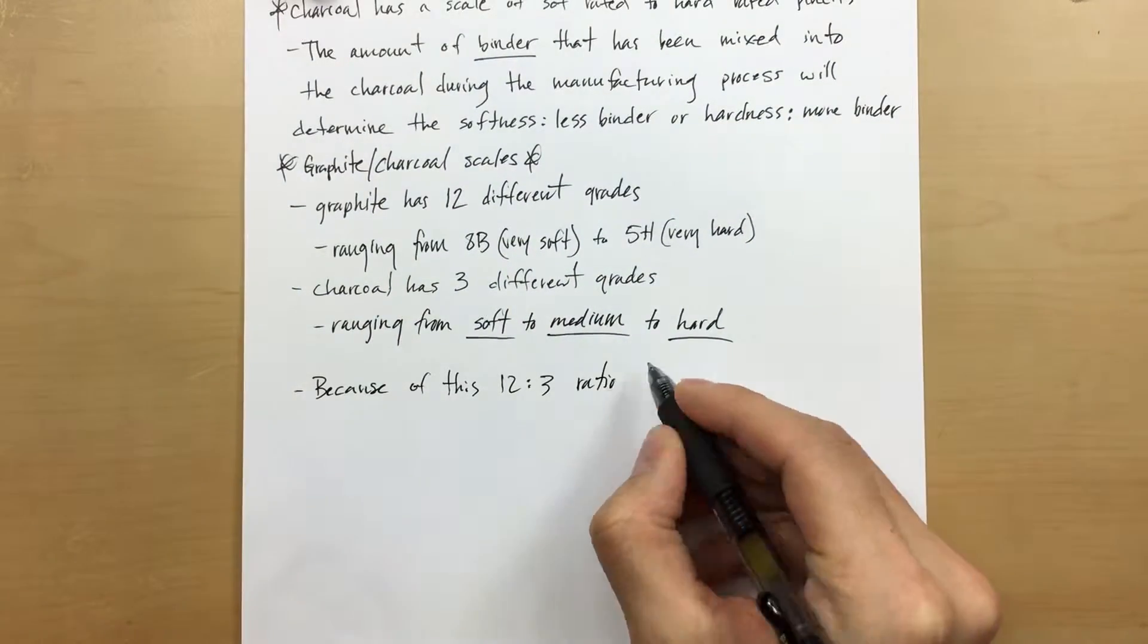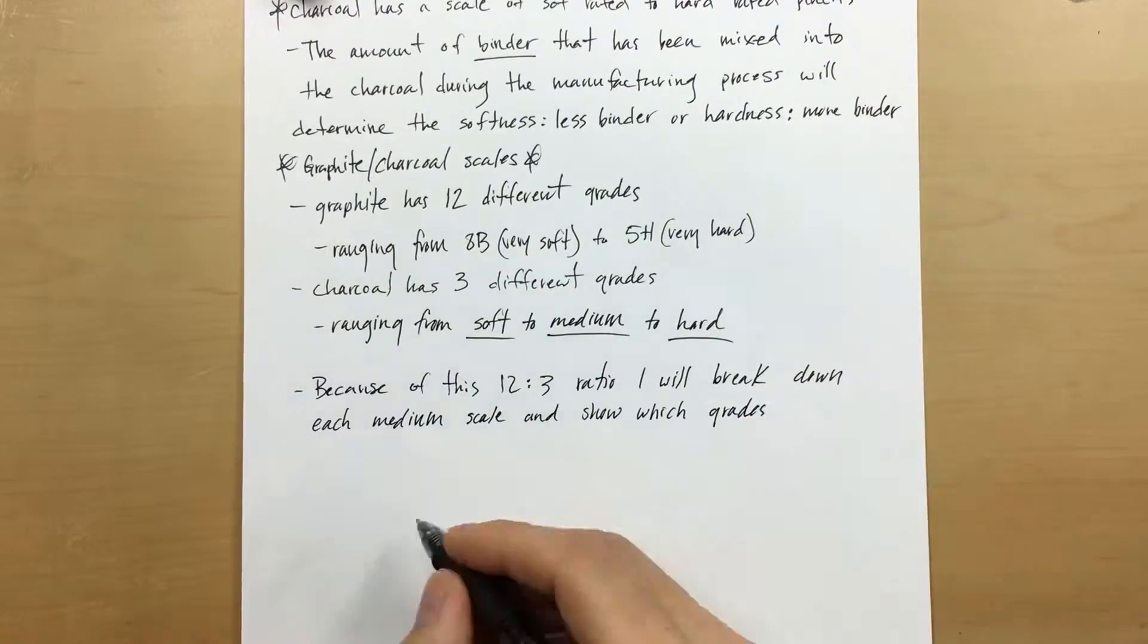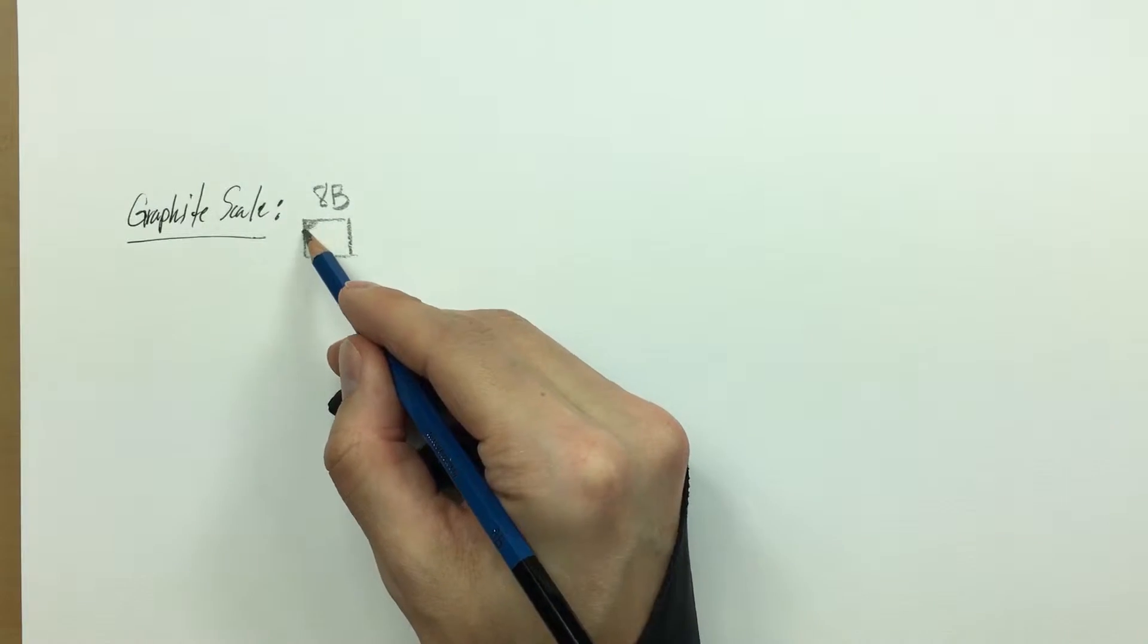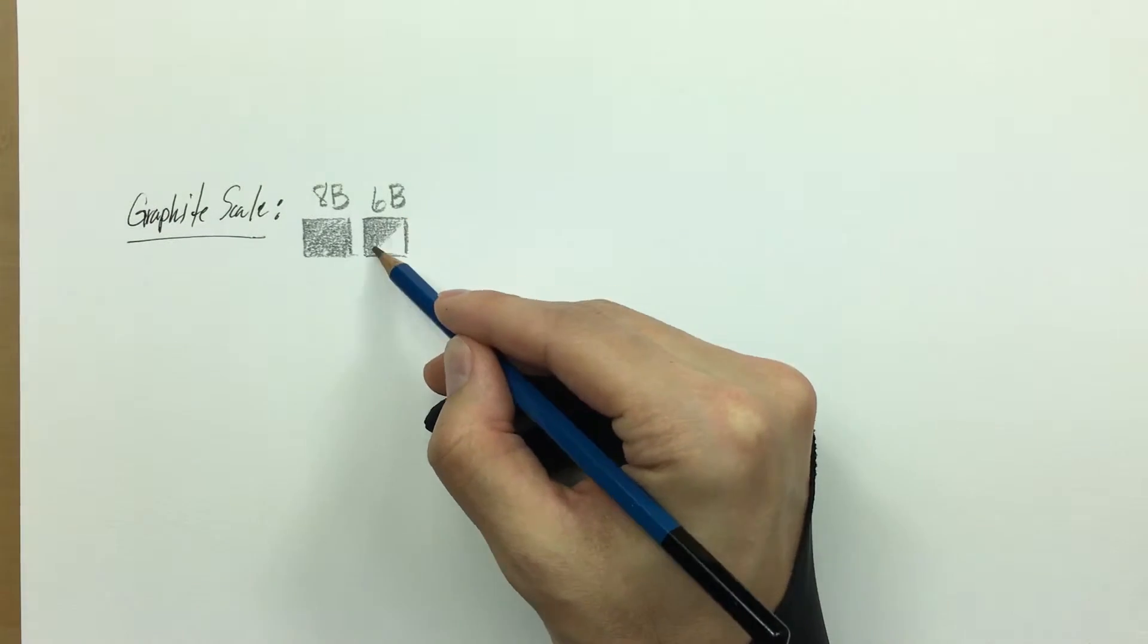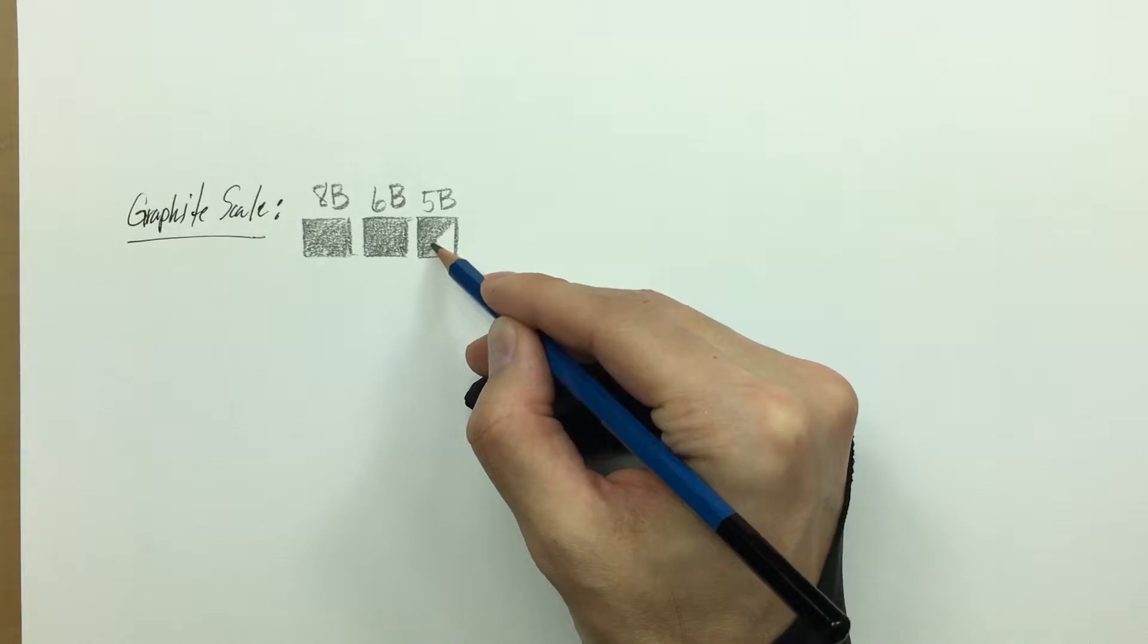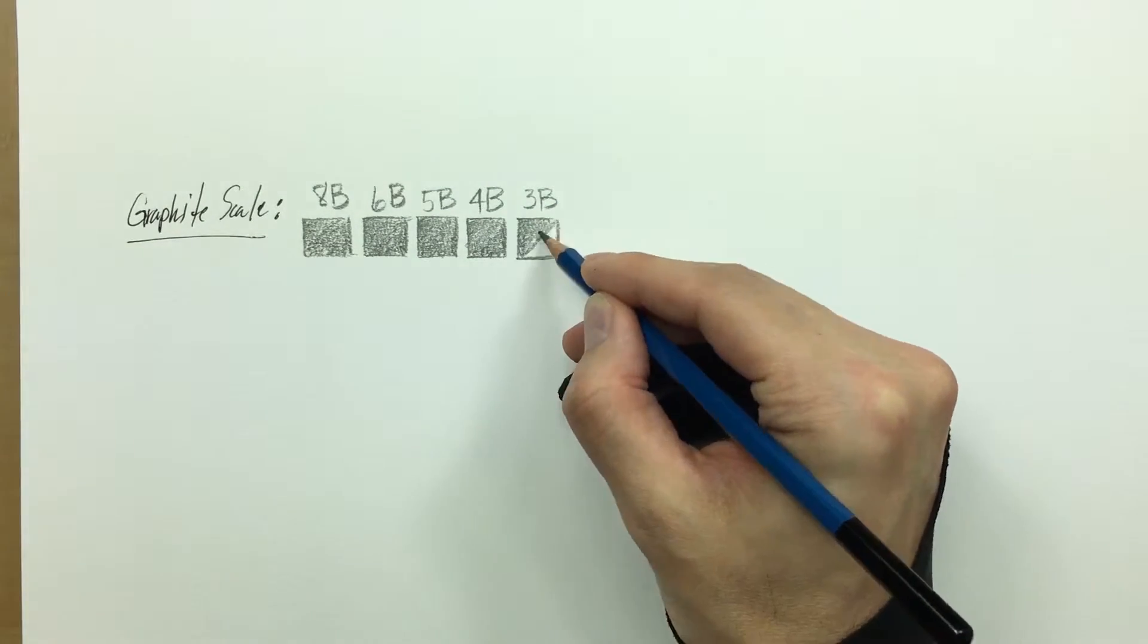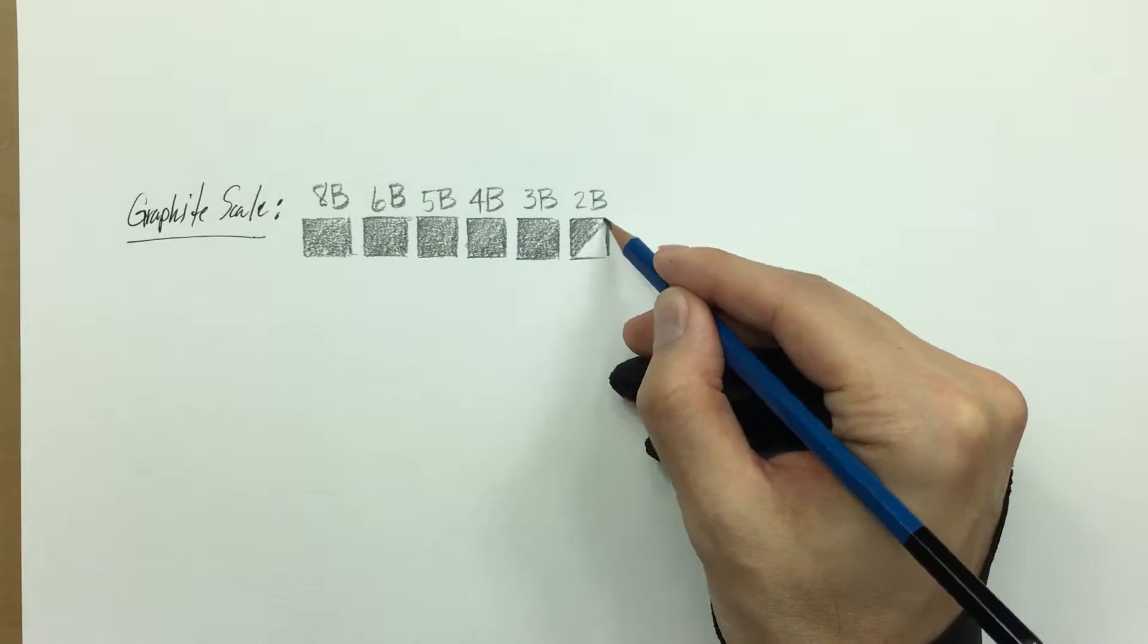Now because of this 12 to 3 ratio, I'm going to break down each medium scale and show you which grades correlate best to each other. Okay, so first up is the graphite scale. We're going to start with an 8B pencil. Now I'm going to be drawing out each one of these 12 different grades so that you can see what they look like onto the paper. The only thing that's changing is the amount of clay filler that's been infused with this graphite is increasing as we work our way down the line. Now with graphite you have a lot of versatility when you compare that directly with charcoal.